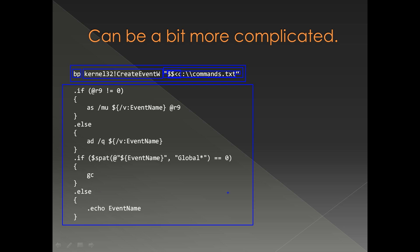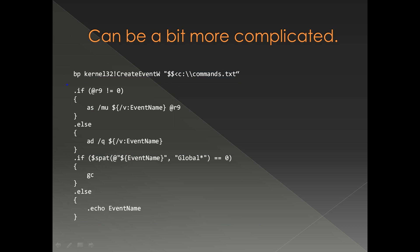The content of that particular file is almost a small program which has two if/else conditions. What this breakpoint does is it breaks into this particular function if the fourth parameter of the function, which is supposed to be a string, is not starting with 'global'. If it is starting with 'global' it does a GC; if not, it prints the name of that particular event and breaks because there is no GC.